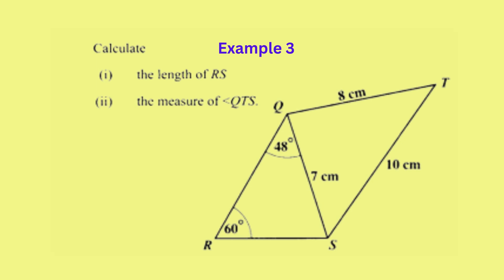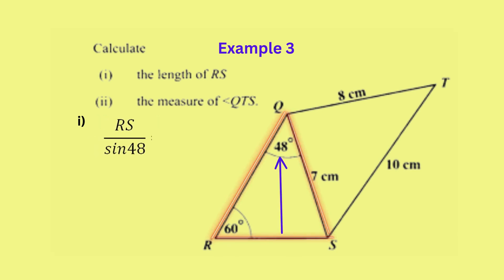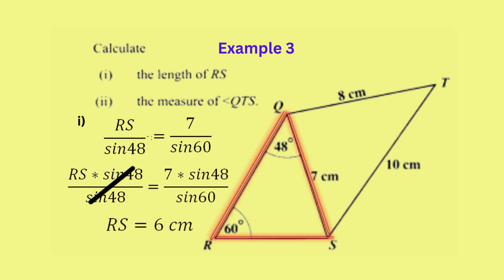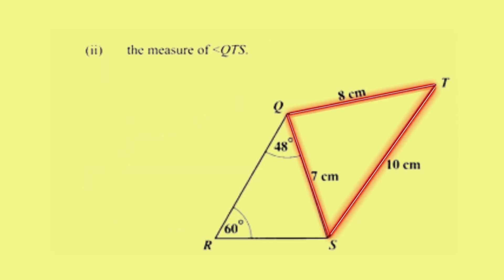To calculate the length of side RS, we focus on triangle RQS. We know the size of an angle and the length of its corresponding opposite side, so the sine rule can be used. Applying the sine rule, we put RS over sine of the angle opposite to RS, which is 48 degrees, equal to 7 over sine of its opposite angle, 60 degrees. Multiplying both sides by sine 48, RS equals 6 centimeters.